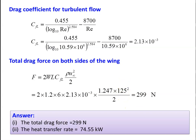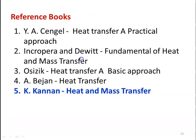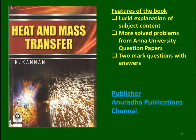Answers for Example 6: total drag force on both sides of wing = 299 N, heat transfer rate = 74.55 kW. These are the books referred for preparing the notes, which can be used for further information. The instructor has also published a book on the subject with additional numerical examples.